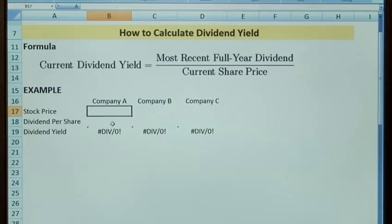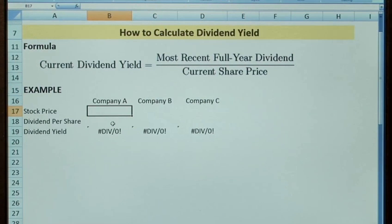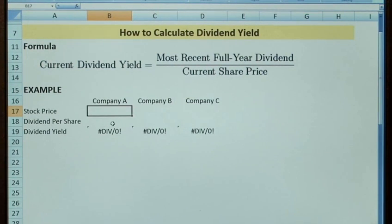We'll calculate it now in an example just to demonstrate how it works and how we can compare one stock to another. On occasion, a high dividend yield could be considered to be evidence that a stock is underpriced, or alternatively a low dividend is evidence that a stock is overpriced and future dividends might be higher.